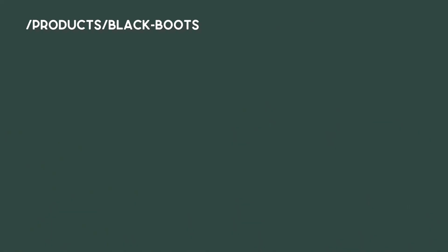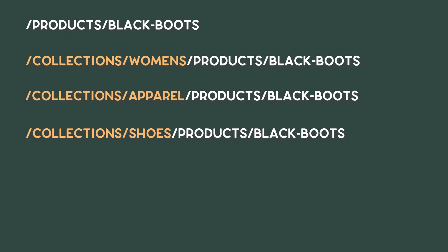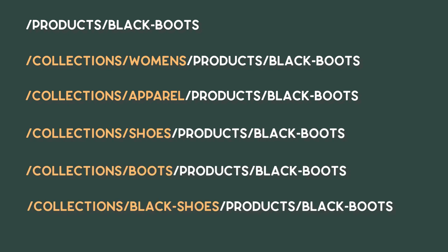The problem with that is that each time you put a product in a different collection, Shopify then creates a different URL for it to actually link in from that collection. So if that product is in five different collections, you now have five different links to the exact same product page, but the URLs are just slightly different based on that collection name.